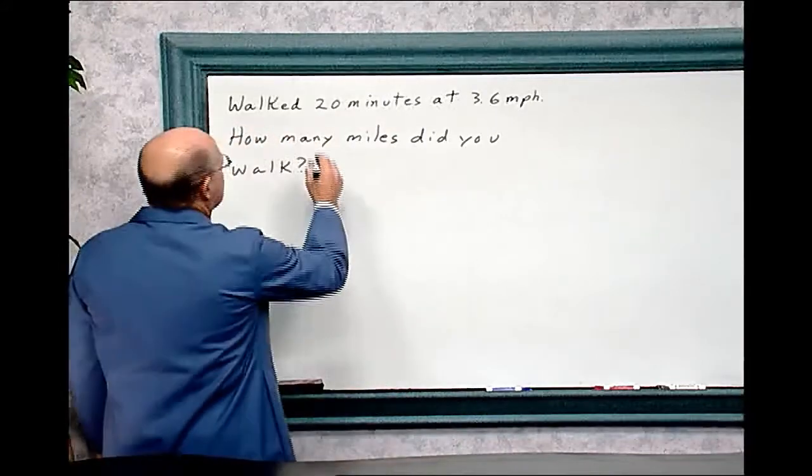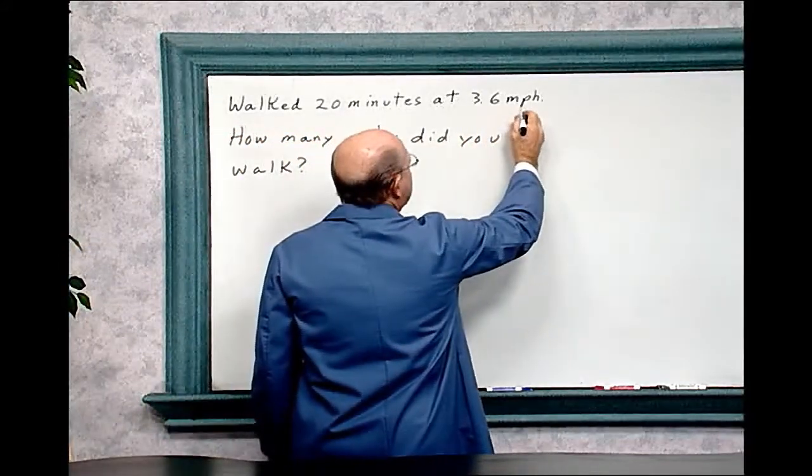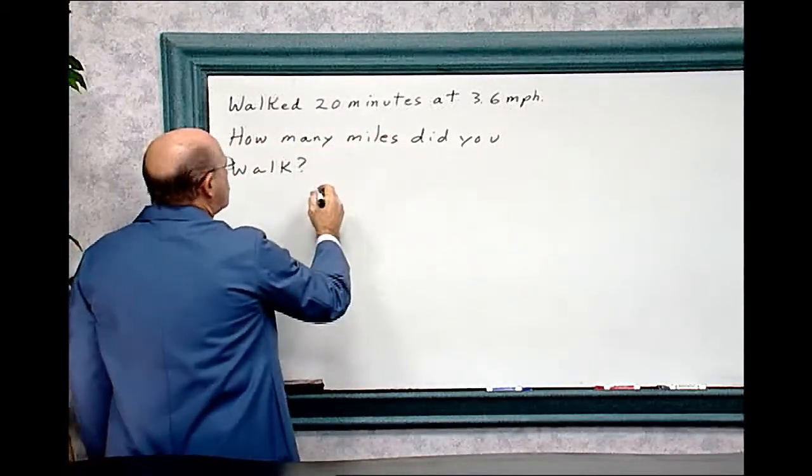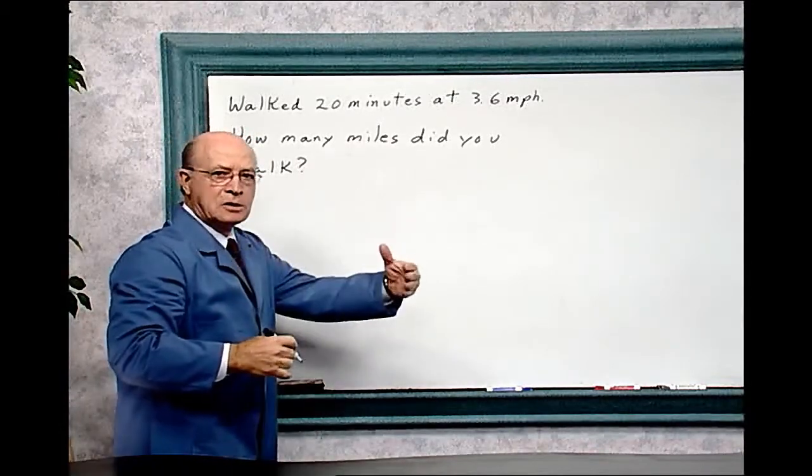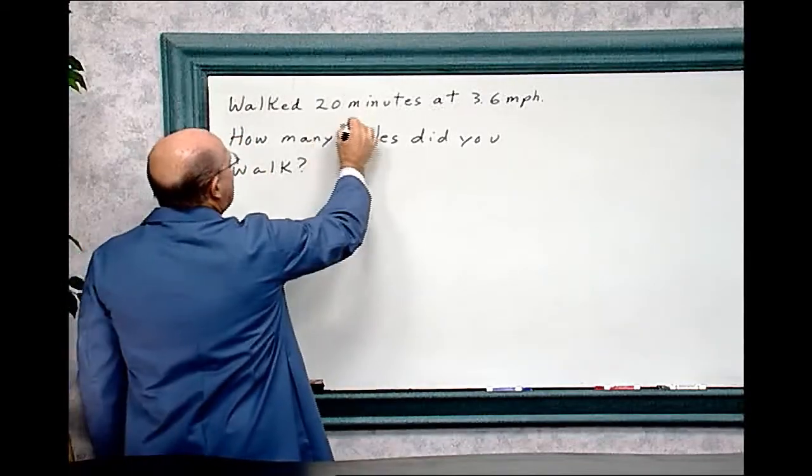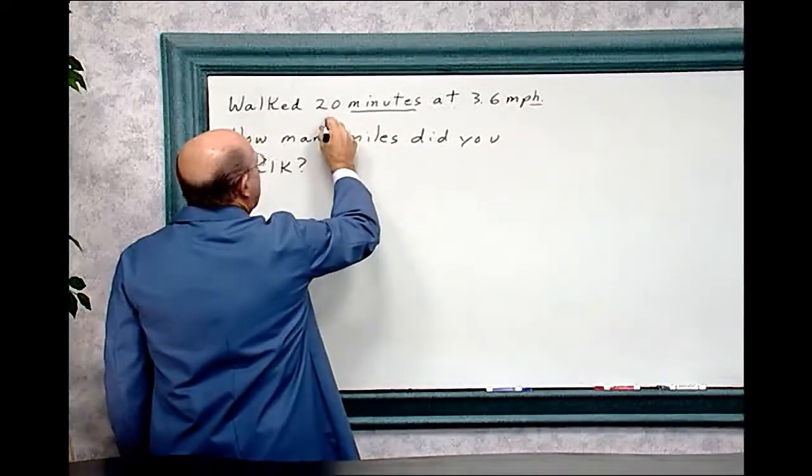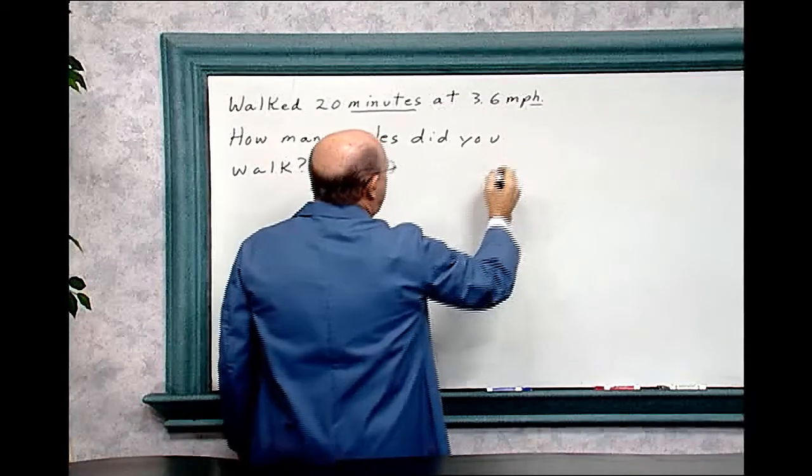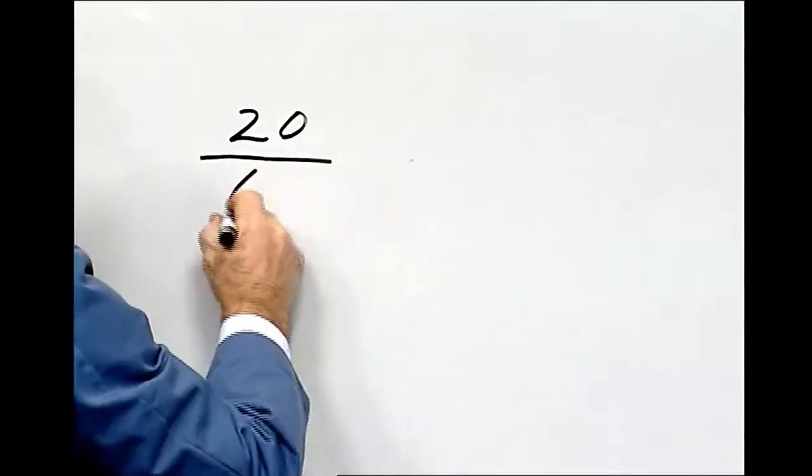You walked 20 minutes at 3.6 miles per hour. How many miles did you walk? And so we want to find out how many miles did you walk on that treadmill. Now this is in minutes and this is in hours, so we've got to convert the 20 minutes into hours. That would be 20 over 60 minutes.